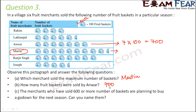Third question: the merchants who have sold 600 or more number of baskets are planning to buy a go-down for the next season. Can you name them? So you need to find out those merchants who sold more than 600 baskets. 600 baskets would mean how many such pictures? Because each picture is 100, so 600 means 6 such pictures. You will have to find out all those rows where you have more than 6 pictures.